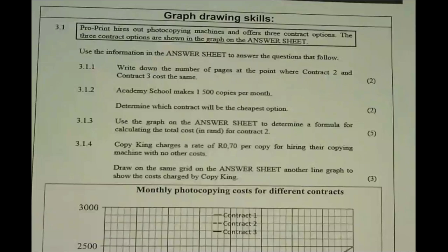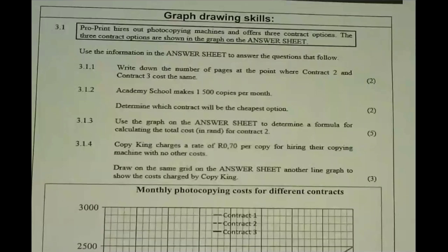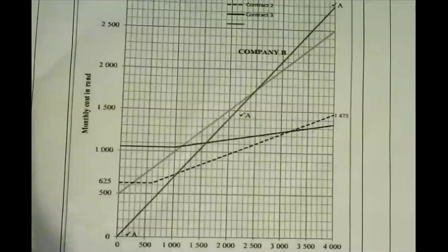The first question asks to write down the number of pages at the point where contract two and contract three cost the same. I don't want to go through every question in detail because I'd like to get to maps and measurements. Some questions just ask us to write out information based on what we see. But I do want to spend time on question 3.1.4, where you need to draw on the same grid another line graph showing the cost charged by Copy King.